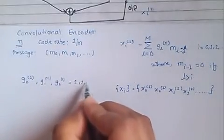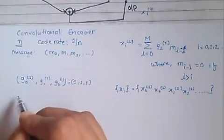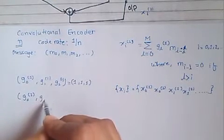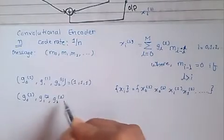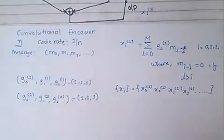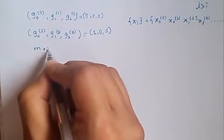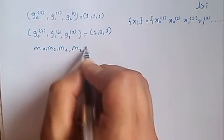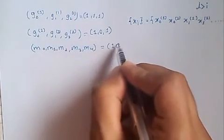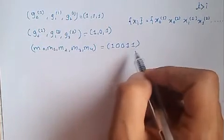For the upper adder, we have g0(1), g1(1), g2(1) equals 1, 1, 1 — the first value corresponds to this point, the second to this point, and the third to this point. Since all three points are connected to the adder, we write 1,1,1. For the bottom adder, g0(2), g1(2), g2(2) equals 1, 0, 1 since the middle point is not connected. The message m0, m1, m2, m3, m4 equals 1, 0, 0, 1, 1 — a 5-bit message.